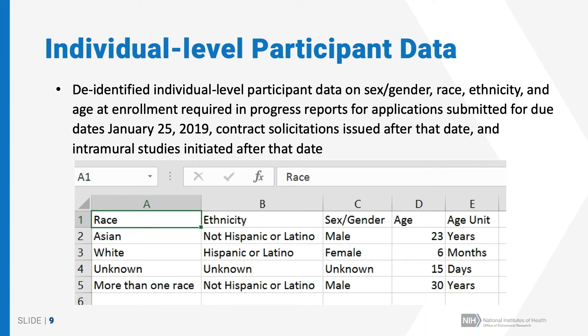A new requirement for NIH as a result of the Inclusion Across the Lifespan policy is that investigators submit individual-level participant data in progress reports. These data are de-identified but provide individual-level data on sex or gender, race, ethnicity, and age at enrollment for each participant in your study. This is required for applications submitted for due dates January 25, 2019 or later, and also for those responding to contract solicitations issued after that date and intramural studies initiated after that date.